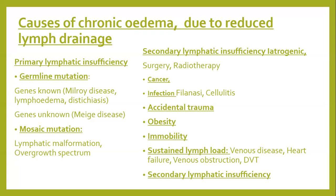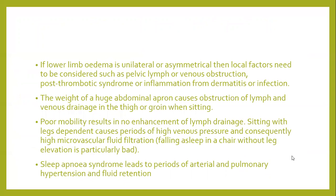If lower lymphedema is unilateral or asymmetrical, local factors need to be considered like pelvic lymph or venous obstruction, post-thrombotic syndrome, or inflammation from dermatitis or infection. The weight of a large abdominal apron causes obstruction of lymph and venous drainage in the thigh and groin when sitting. Poor mobility results in no enhancement of lymphatic drainage. Sleep apnea syndrome leads to periods of arterial and pulmonary hypertension and fluid retention.